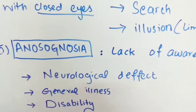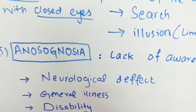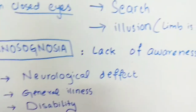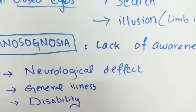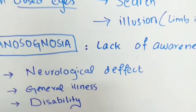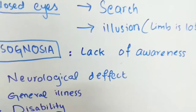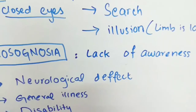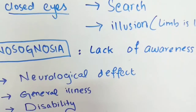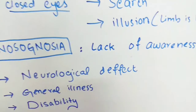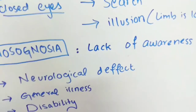The fifth symptom is anosognosia, which is the lack of awareness of any neurological defect, general illness, or disability. The patient will not be aware of any defect, illness, or disability he has, or he will simply deny the fact.